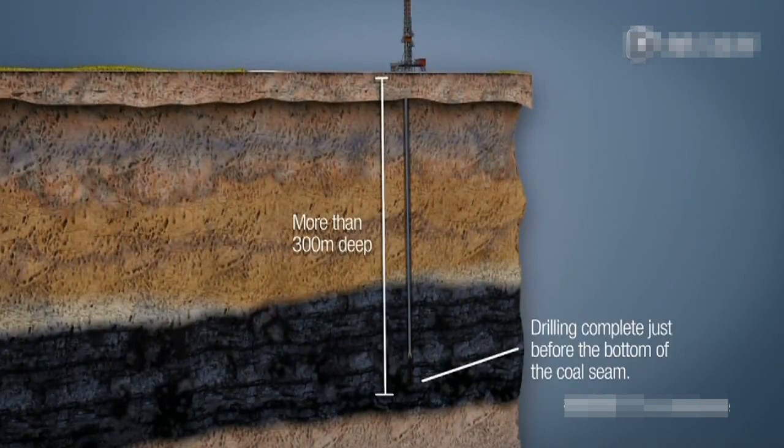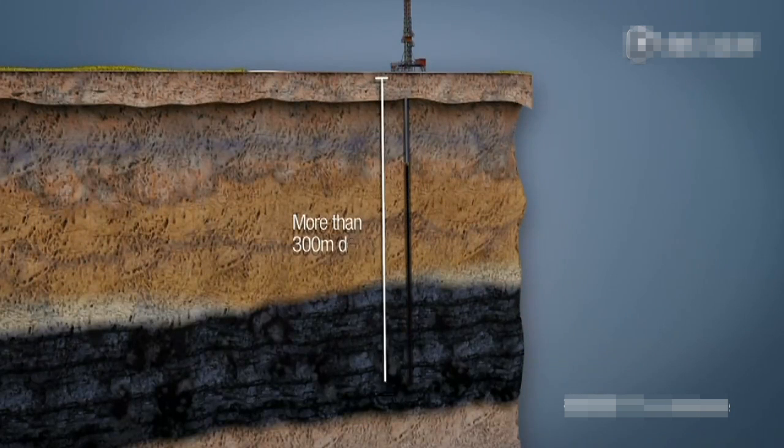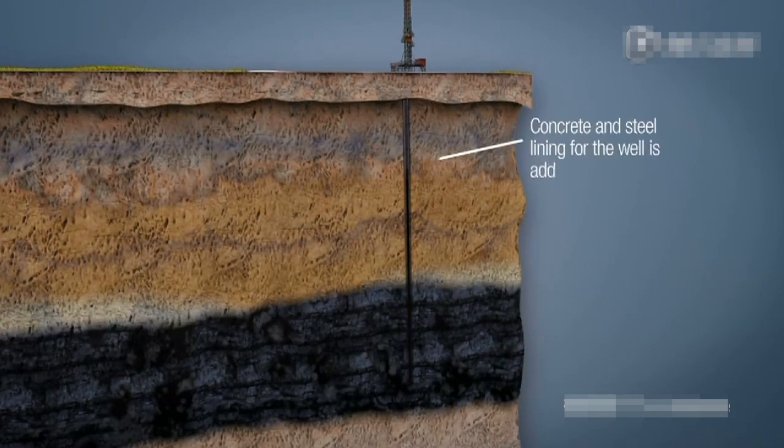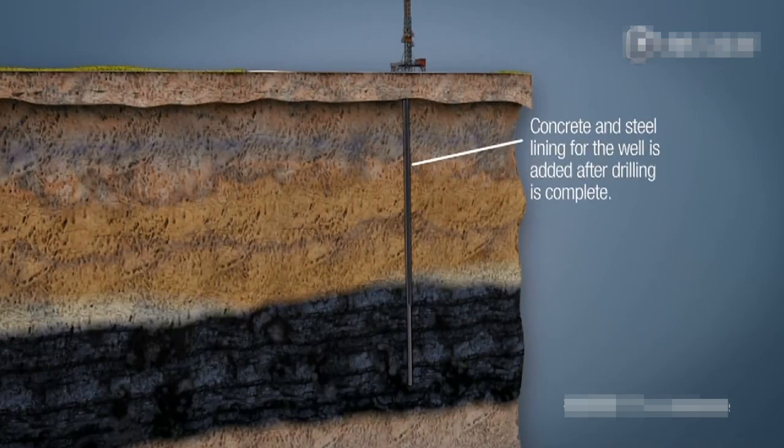Once the well has been drilled, steel casing and special high-temperature cement are installed from surface to the coal seam to ensure isolation from any groundwater aquifers.